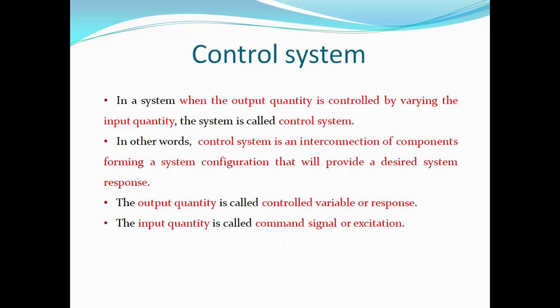What is a control system? In a system, when the output quantity is controlled by varying the input quantity, the system is called a control system. In other words, a control system can be defined as an interconnection of components forming a system configuration that will provide a desired system response. The output quantity is called the controlled variable or response, and the input quantity is called the command signal or excitation.